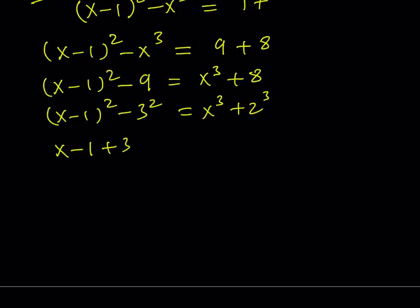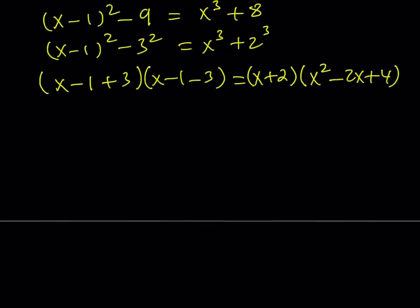x minus 1 plus 3. I like the plus 1 first. And then x minus 1 minus 3. a squared minus b squared. That's the difference of two squares. One of the most important identities in algebra or mathematics in general I think. x plus 2 times x squared minus 2x plus 4. This is the sum of two cubes. Again there's a formula for a cubed plus b cubed.